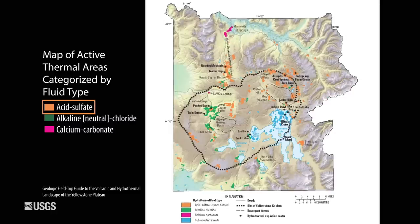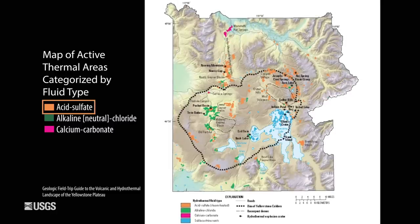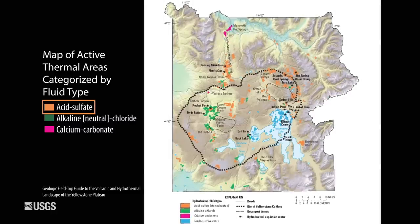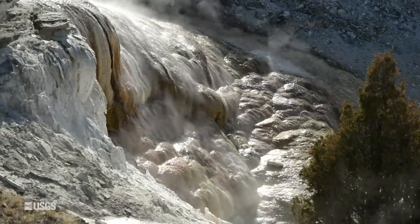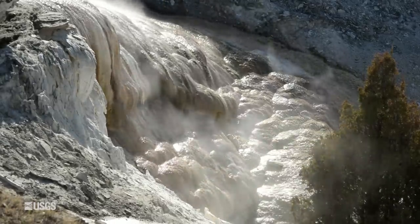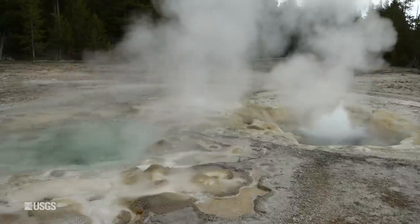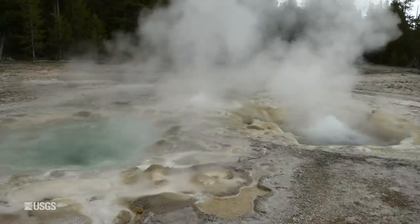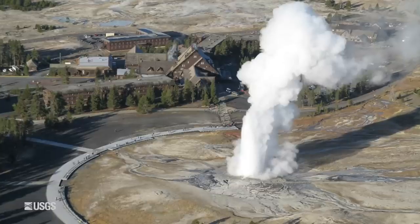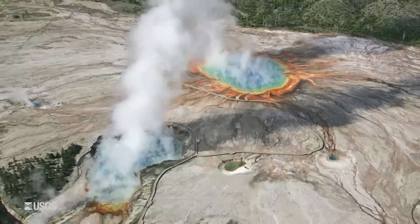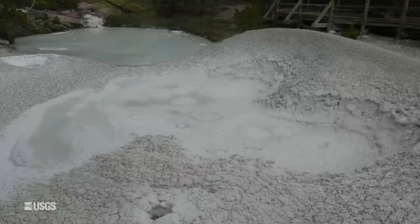We're going to start this update with the third in our three-part series on the different types of thermal features in Yellowstone. Back in August, we talked about travertine features, which we find in the Mammoth Hot Springs area. Last month, we talked about neutral chloride features, things like Old Faithful and Grand Prismatic Spring. And this month, we're coming to you from Artis Paint Pots to talk about a third type of feature: acid sulfate springs.